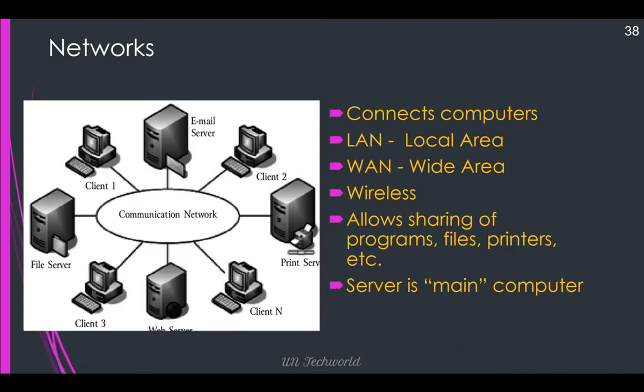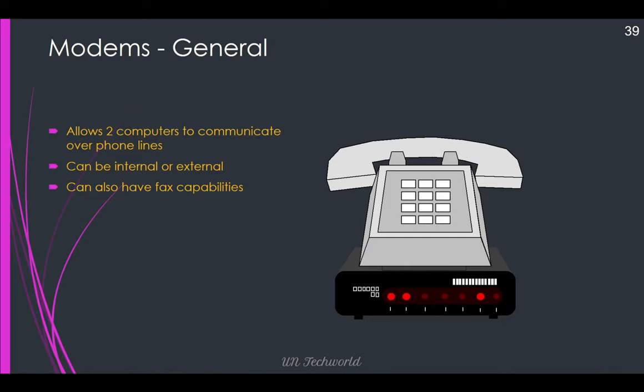Networks connect computers via LAN, WAN, wireless, and Bluetooth, allowing sharing of program files, printers, etc. A server is the main computer. Modems — modulation and demodulation — allow two computers to communicate over a phone line. They can be internal or external and may also have fax capabilities. Nowadays we are using fiber connectivity to connect computers and access the internet.